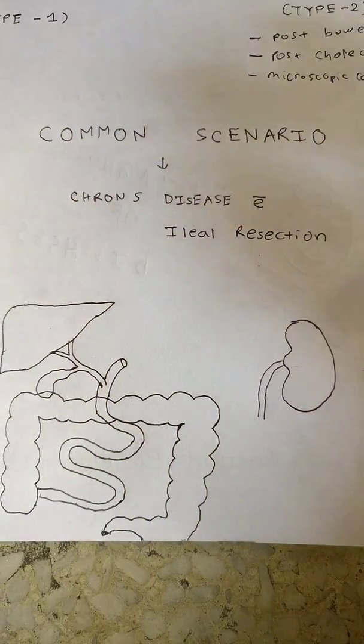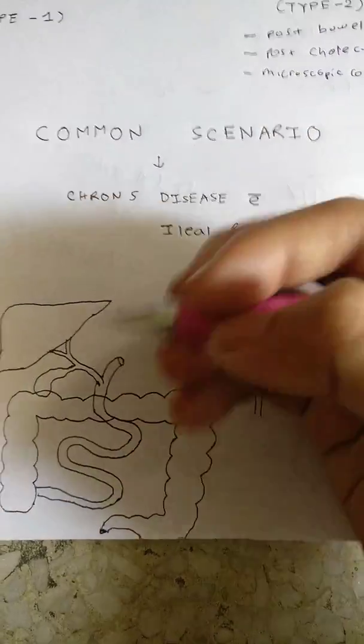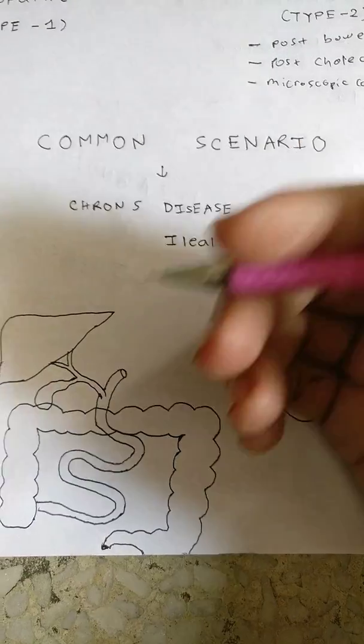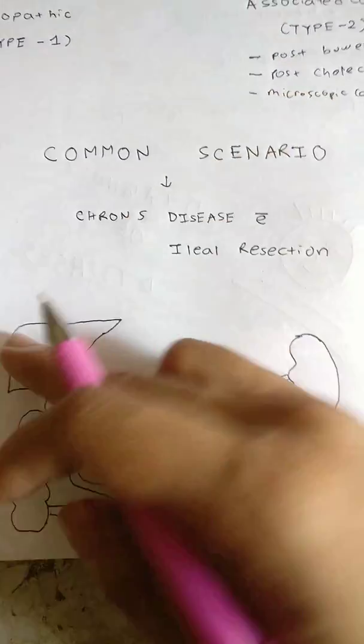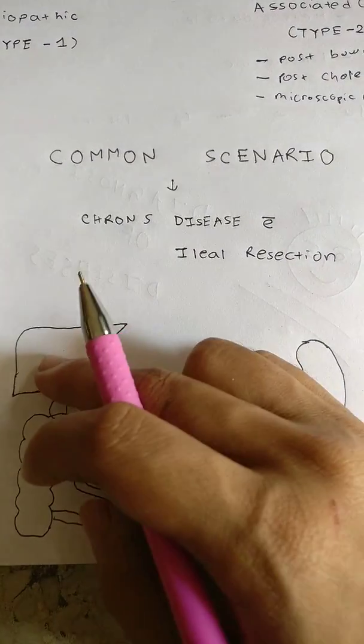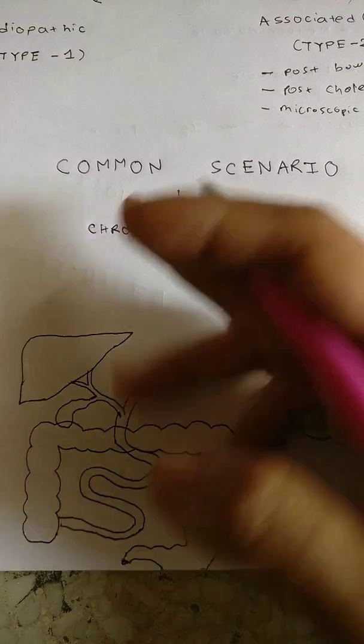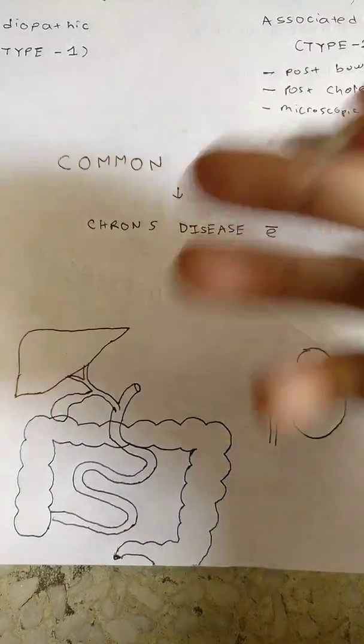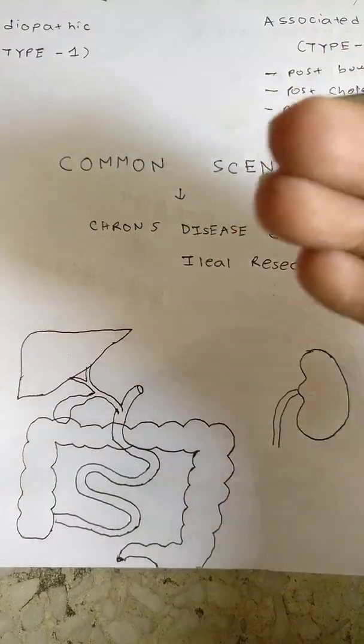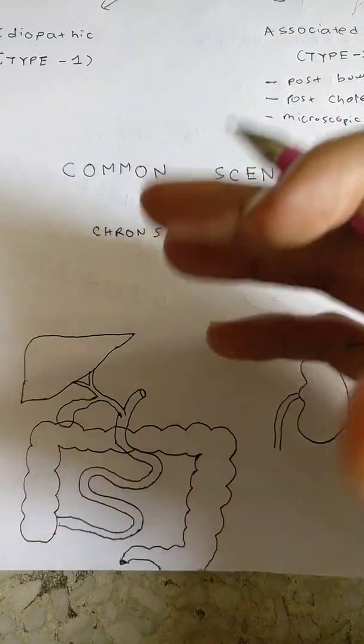Here what happens is that we know the terminal ileum absorbs the bile salt, and through the portal vein it goes to the liver and the liver produces bile which again occurs in a circle, a circulation which is called the enterohepatic circulation.